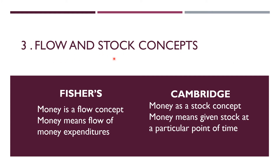The next point concerns flow and stock concepts. In Fisher's case, money is a flow concept — it refers to the flow of money expenditures, how much money you are spending in transactions of goods and services. In the Cambridge approach, money is a stock concept — it refers to the given stock at a particular point of time, how much money the public is holding in their hands at any given moment.